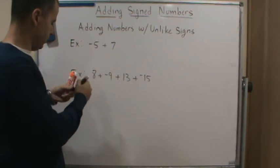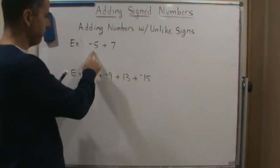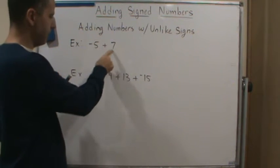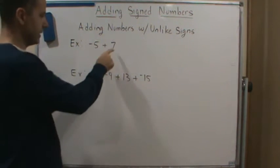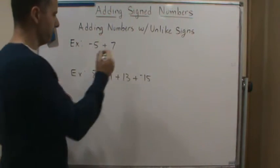So if we look at this as 7 minus 5. So what's 7 minus 5? It's 2.